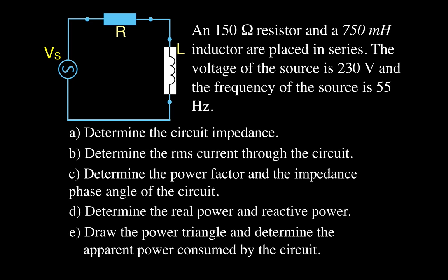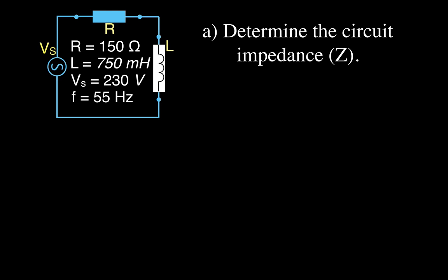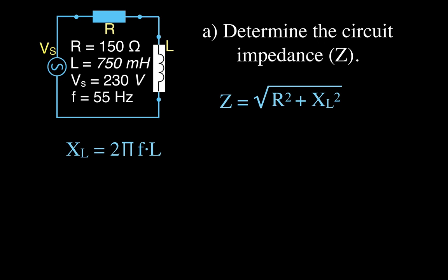Let's get started by determining the circuit impedance. The equation for impedance is Z equals the square root of R squared plus XL squared. We don't know the inductive reactance yet — we know the inductor is 750 millihenries but we need to calculate XL first. XL equals two times pi times frequency times inductance.